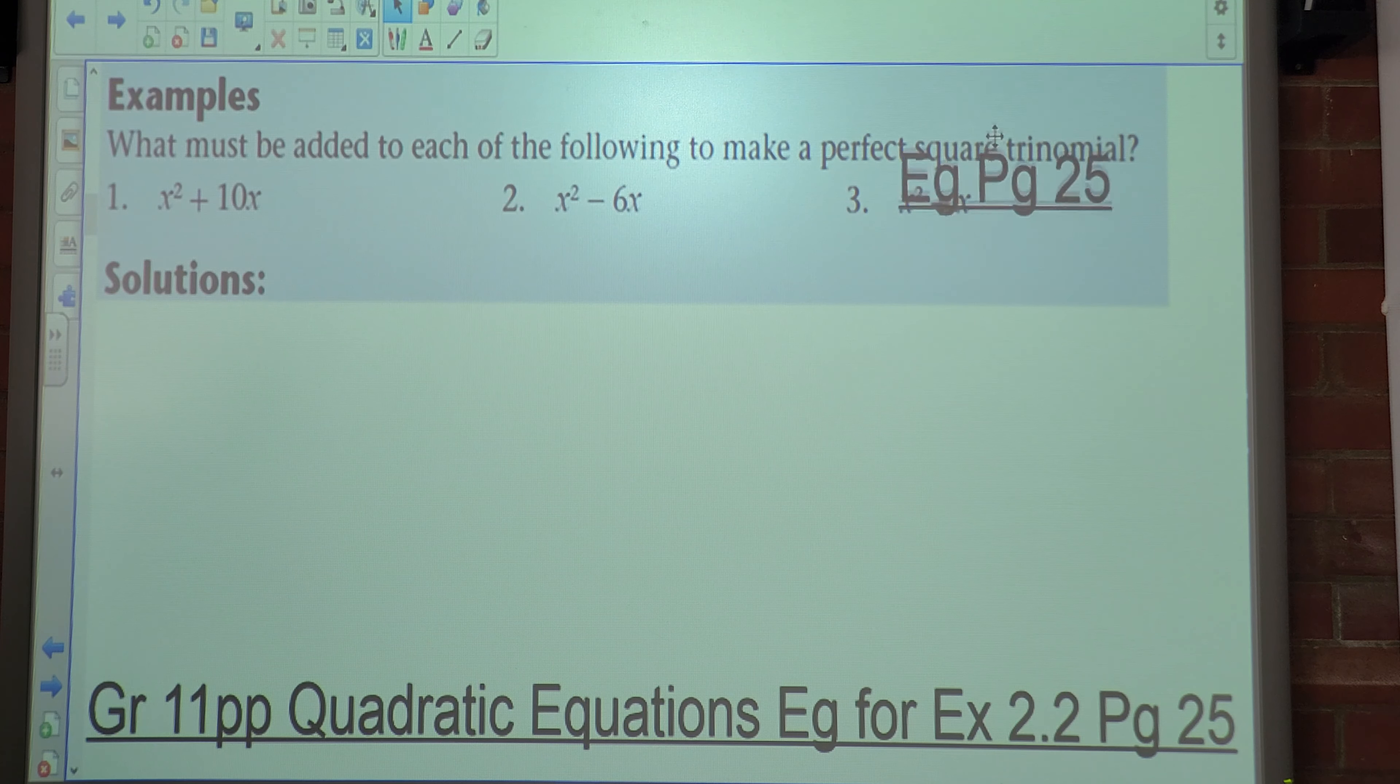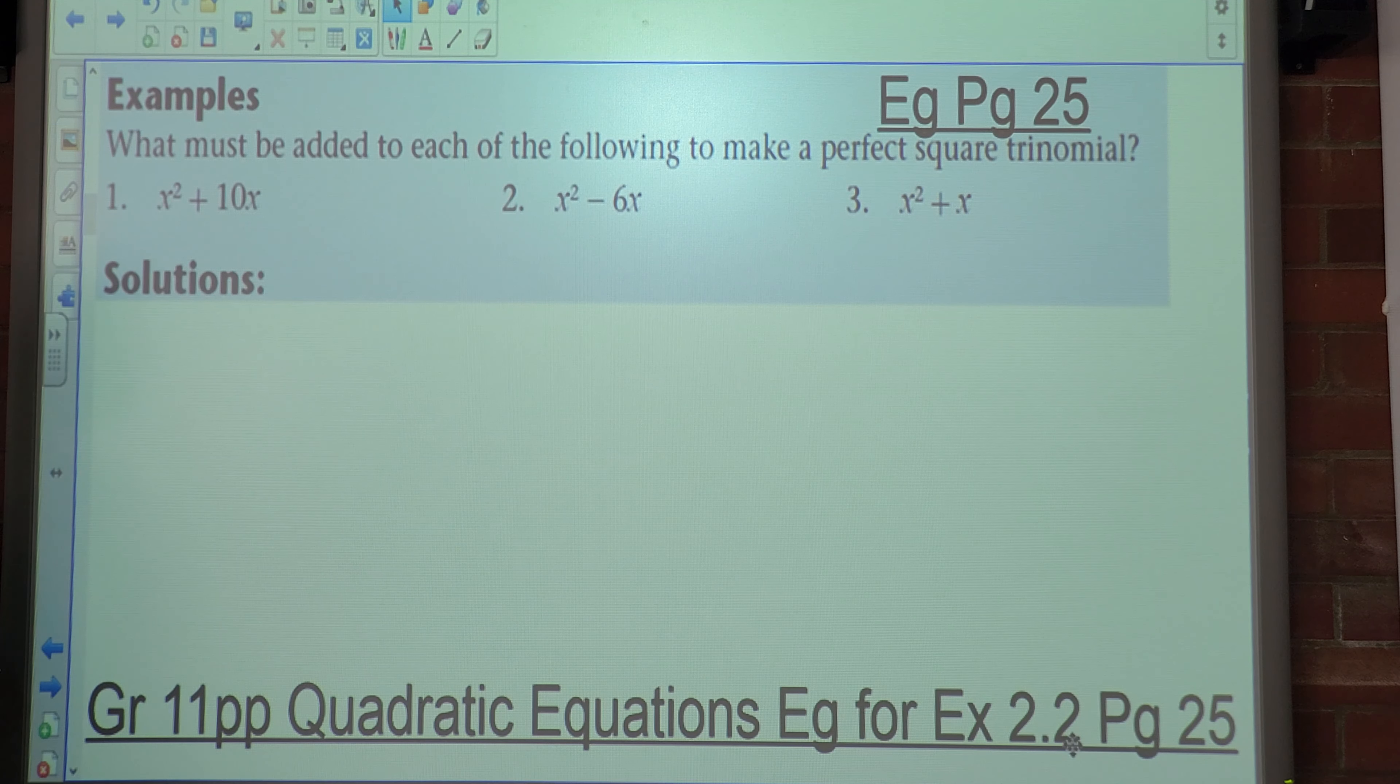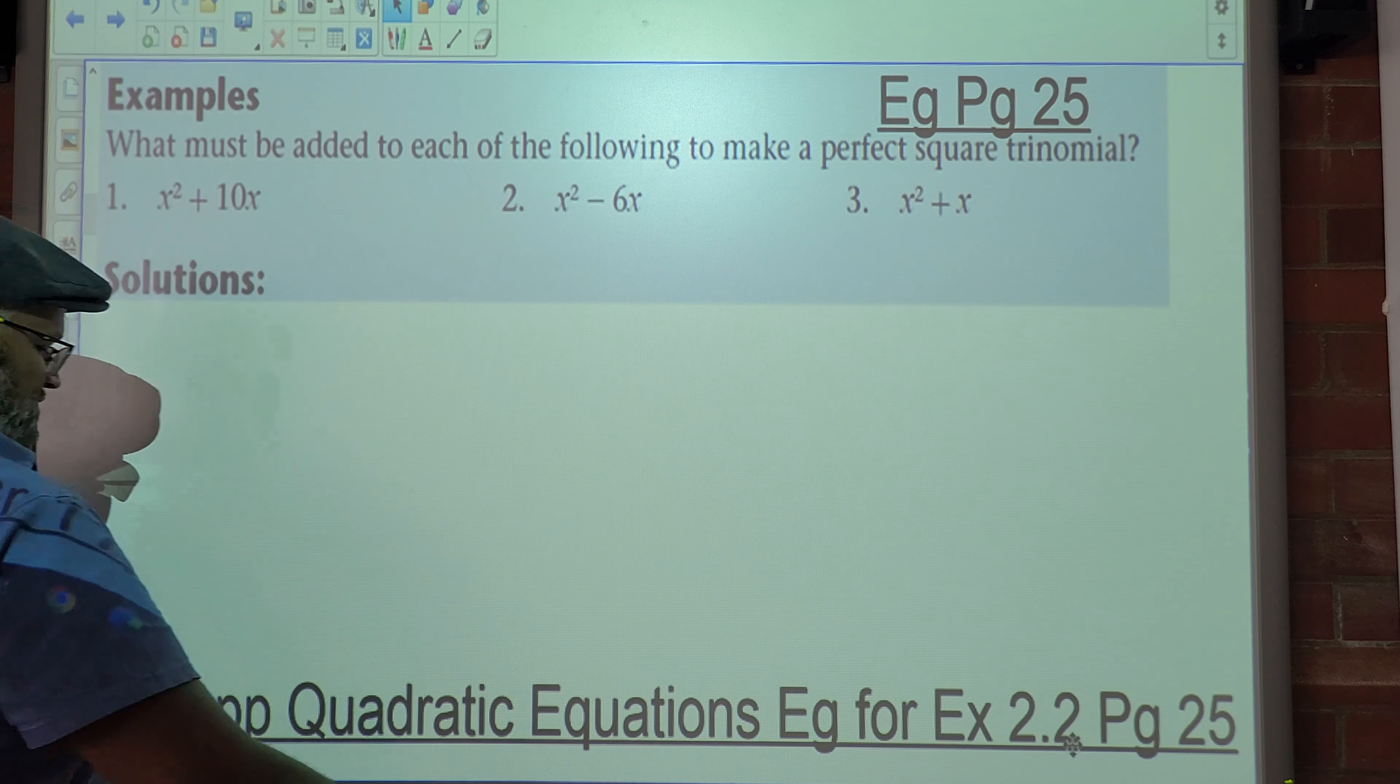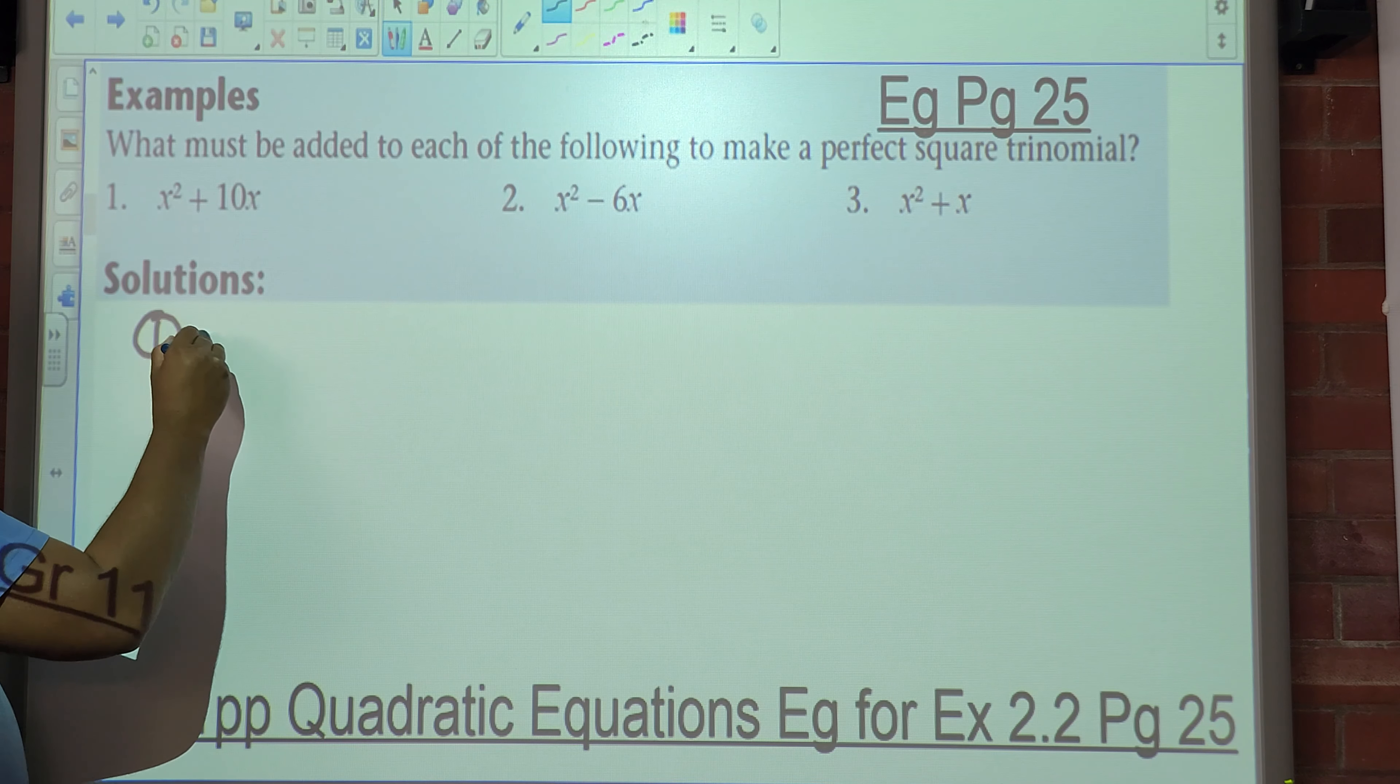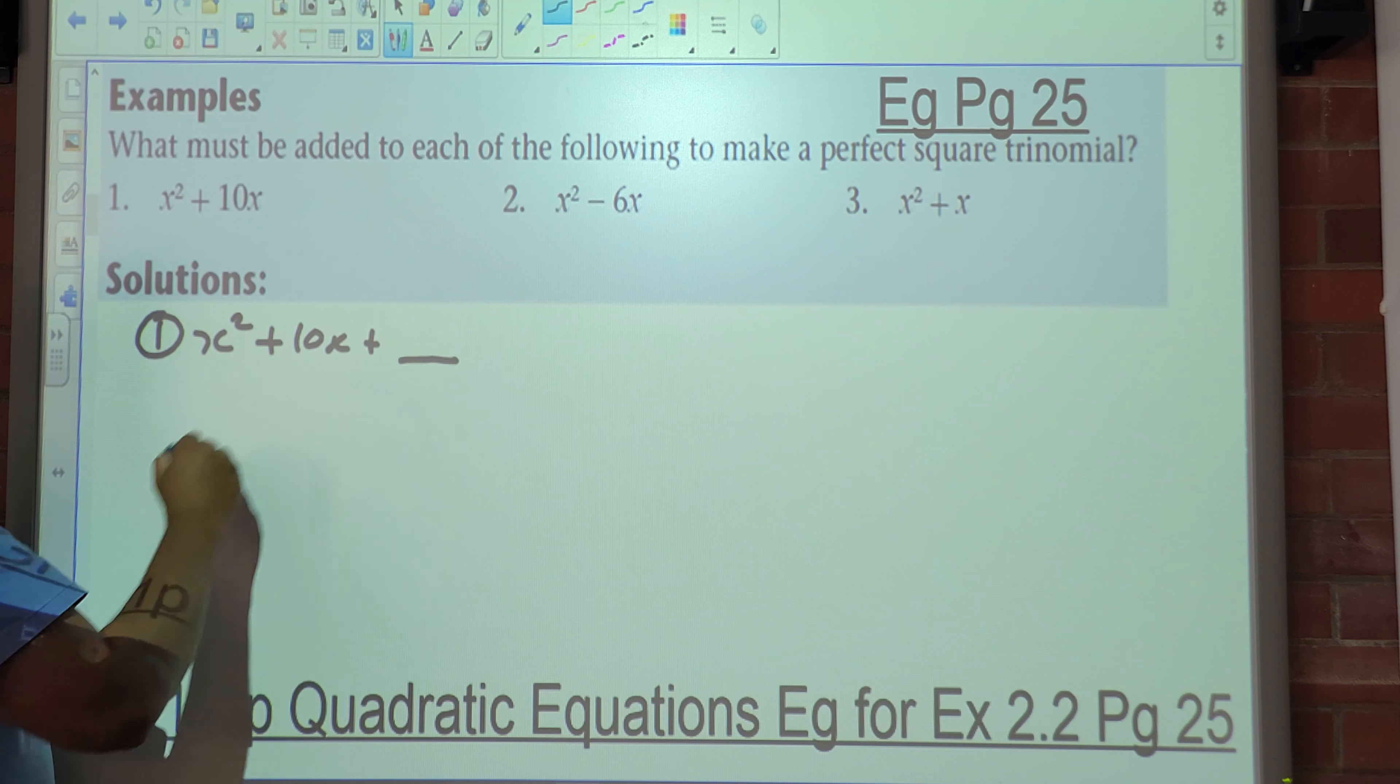Okay. So the question says: what must be added to each of the following to make a perfect square trinomial? Looking at number one, the sum is x² + 10x. The first question: what must be added?